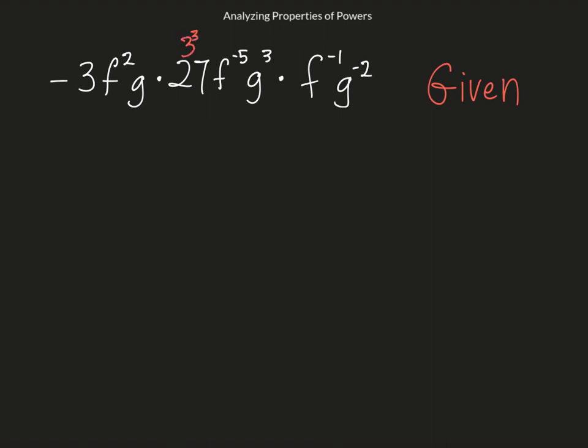So I'm going to rewrite this now as negative 3 to the first times 3 to the third times f squared times f to the negative 5 times f to the negative 1